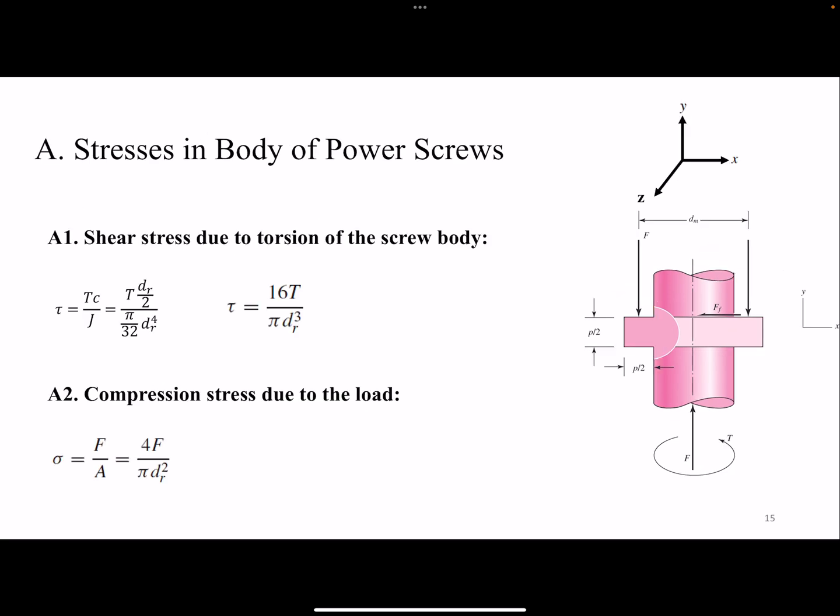Let's look at the values of these stresses. So for the torsion we know the equation is τ = Tc/J. C for us, or the maximum radius that it's applying is dr over 2, is the root diameter. So basically we're looking at these edges on the outer edges. That's the dr over 2. And J is π over 32 dr to the fourth. We can simplify it into this equation.